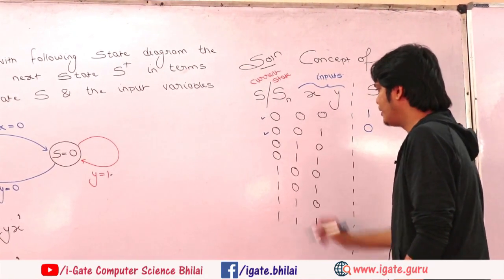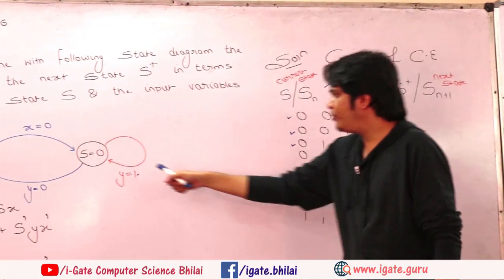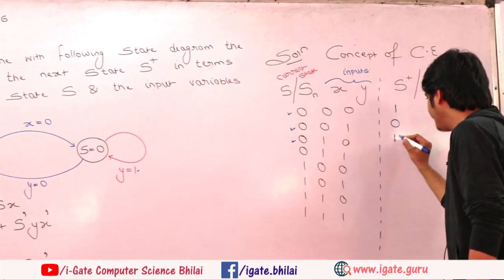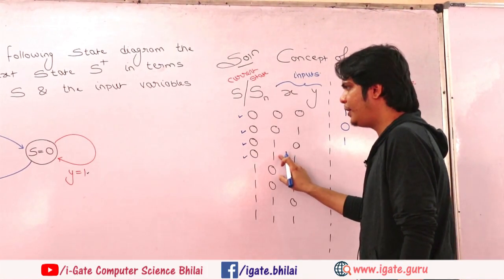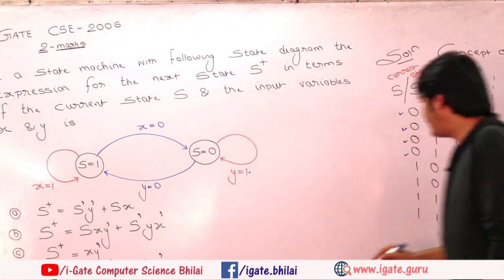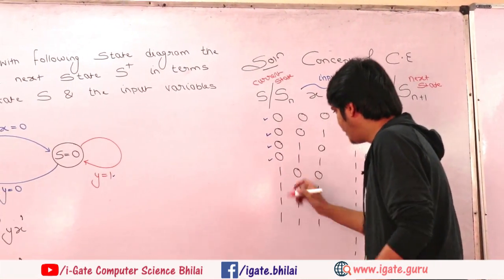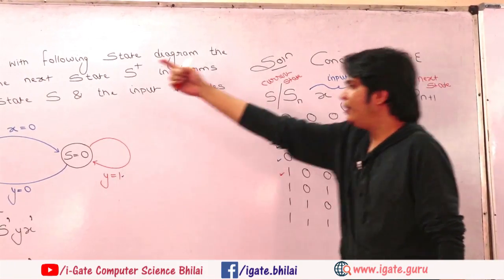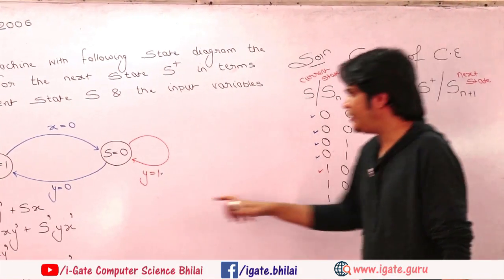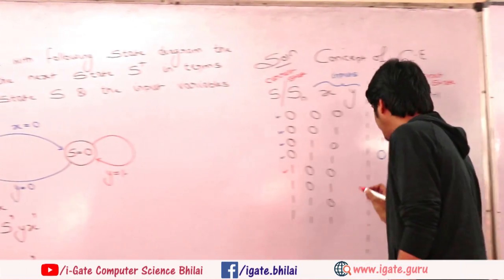Previously it was 0, and it is still 0. For S=0, X=1, Y=0: since S=0 and Y=0, the output changes to 1 — fill in 1. For S=0, X=1, Y=1: since S=0 and Y=1, independent of X, it was 0 before, still 0. Now moving to S=1: for S=1, X=0, Y=0 — we get a transition, the output changes to 0.